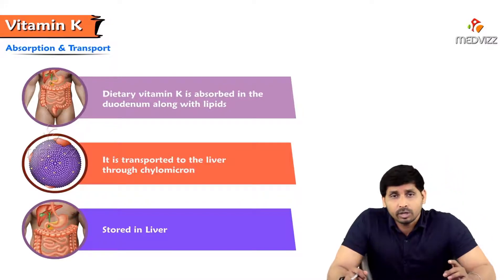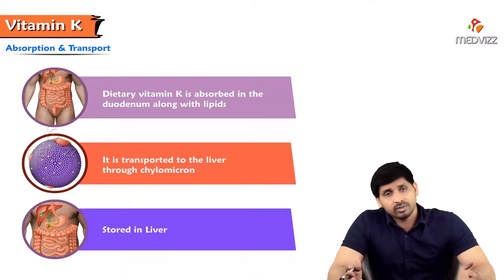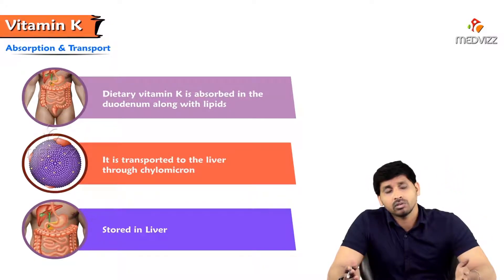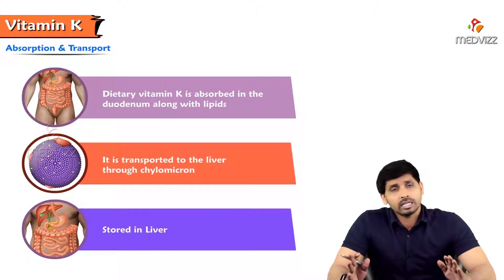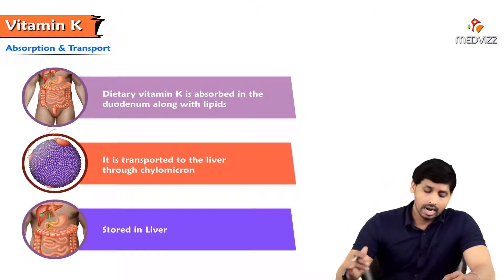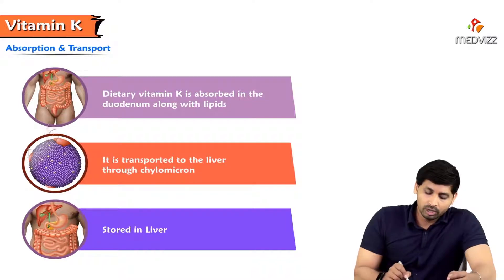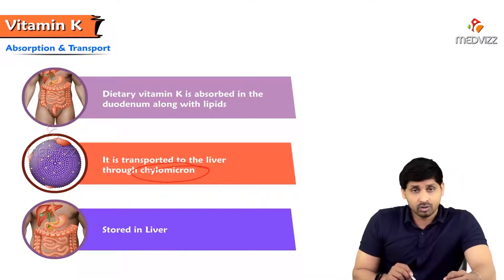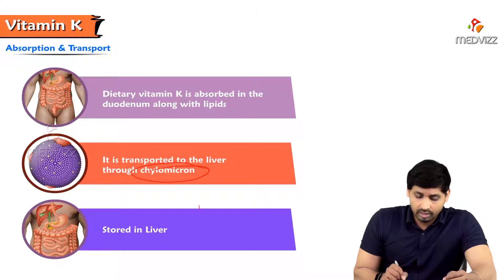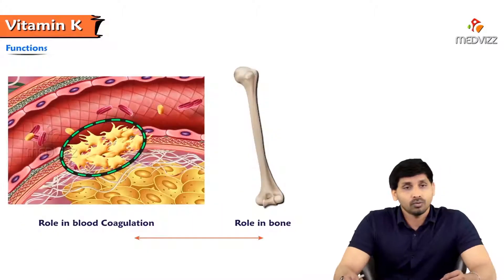Coming to absorption and transport: vitamin K is a fat-soluble vitamin, so its absorption and transport is similar to lipids. It will be transported majorly by the lipoprotein chylomicron and stored in the liver.